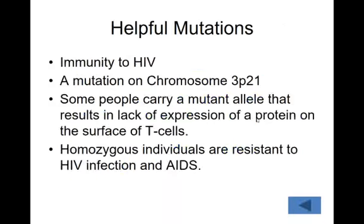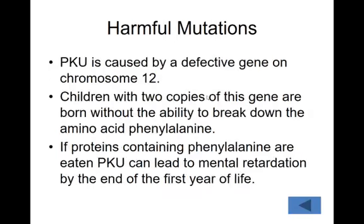For example, there are helpful mutations — one is a mutation on chromosome 3 that makes people immune to HIV. They end up missing a protein on the outside of their T cells, which means they are resistant to HIV infection and therefore AIDS.